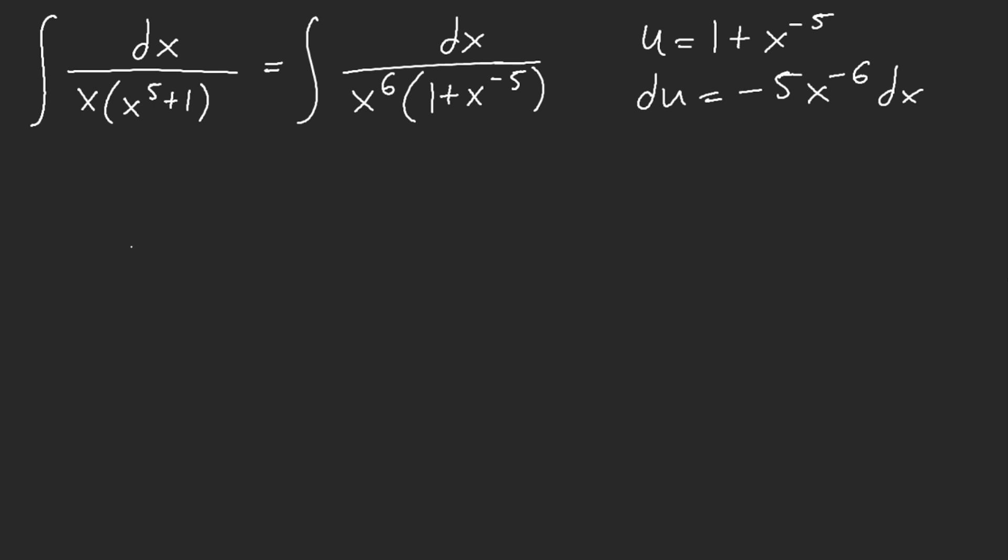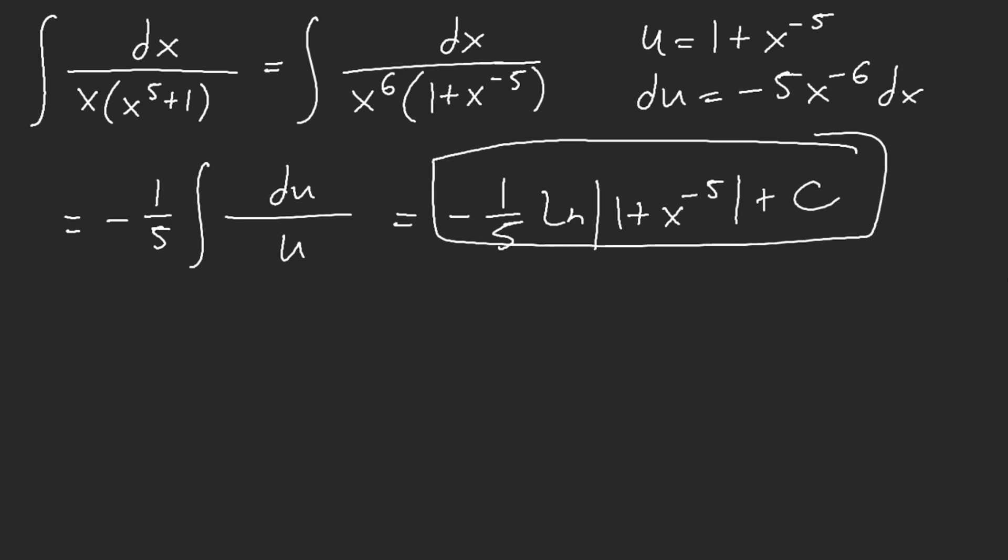So what we have now is negative one-fifth of du over u. We have negative one-fifth ln of u, which is this, and you're done. There's no need for partial fractions. This is all you had to do and it was pretty simple.